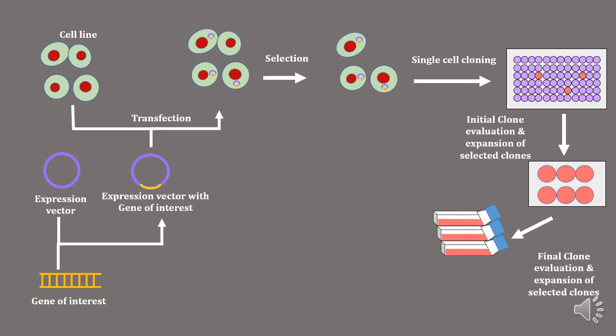The cells selected during this process will be grown in the cell culture flask. In the clone evaluation and expansion process, we are checking the antibiotic resistance to make sure that the cells we are selecting contain the recombinant vector, and also we are checking the expression of our gene of interest.